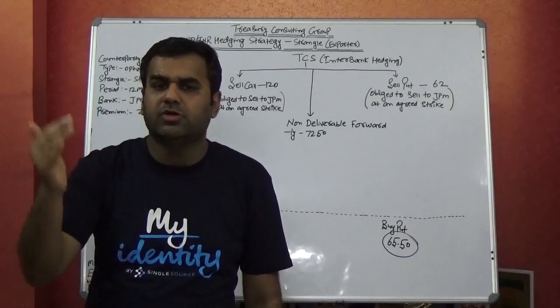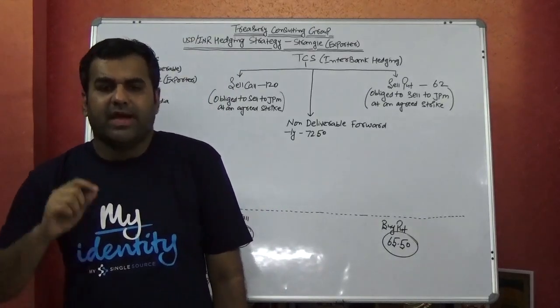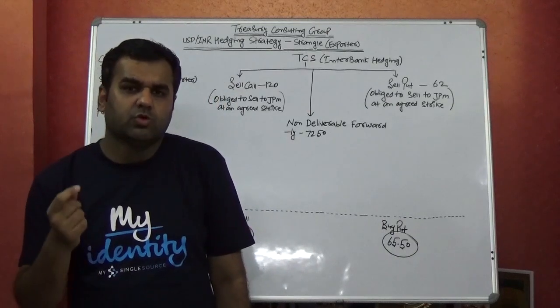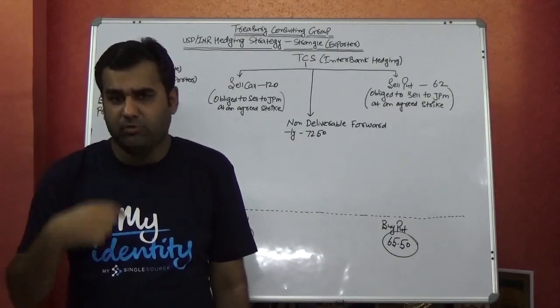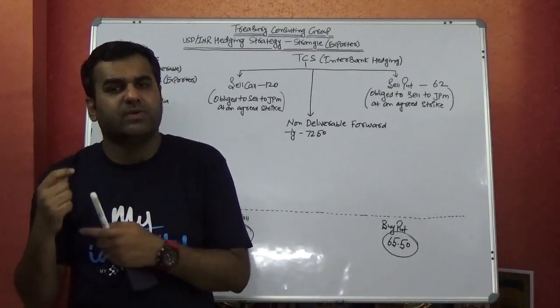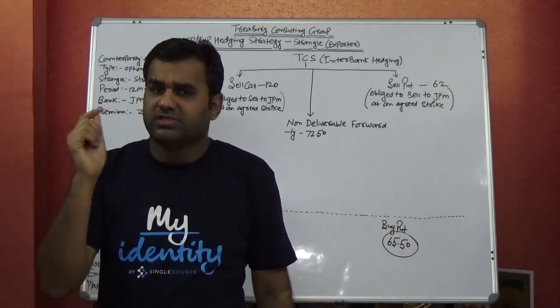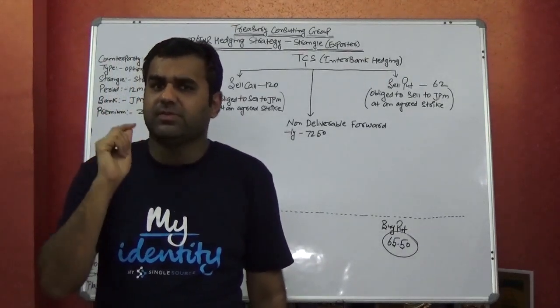But the settlement would happen on 21st March because Indian rupee is traded T+2. And since it is traded T+2, the Tokyo cut would come 2 working days before. I do not have a calendar in my hand. I am assuming that 21st March is a working day—21st March 2020.